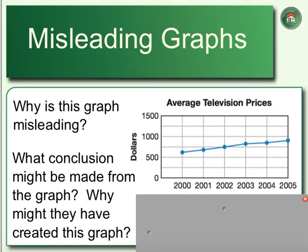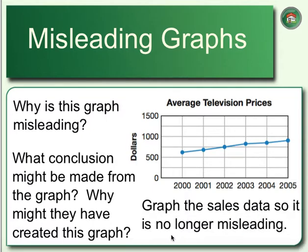Let's look at this one. Why is this graph misleading? If you want to stop the video and think for yourself, that's a great idea. It looks like some data has been compressed. We could hone in on this information and see — between $500 and $1,000, what does it look like? It looks like it's going up a good amount, but it's actually rising pretty quickly from 2000 to 2005. We're also not seeing data outside of that range, which is a pretty small range in the scheme of televisions. We should probably see some more dates as well.